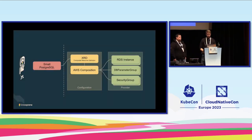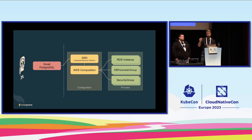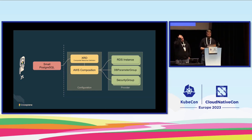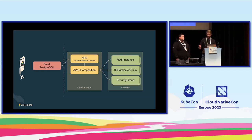Another tangible example: developers request a small Postgres database — that's all they get access to at that layer. Underneath the covers, you've got a composition for AWS, possibly one for GCP, maybe a gold and a silver tier — multiple different compositions that implement one particular infrastructure API. That then folds out into RDS, parameter groups, the DB, security groups, and all that sort of stuff.